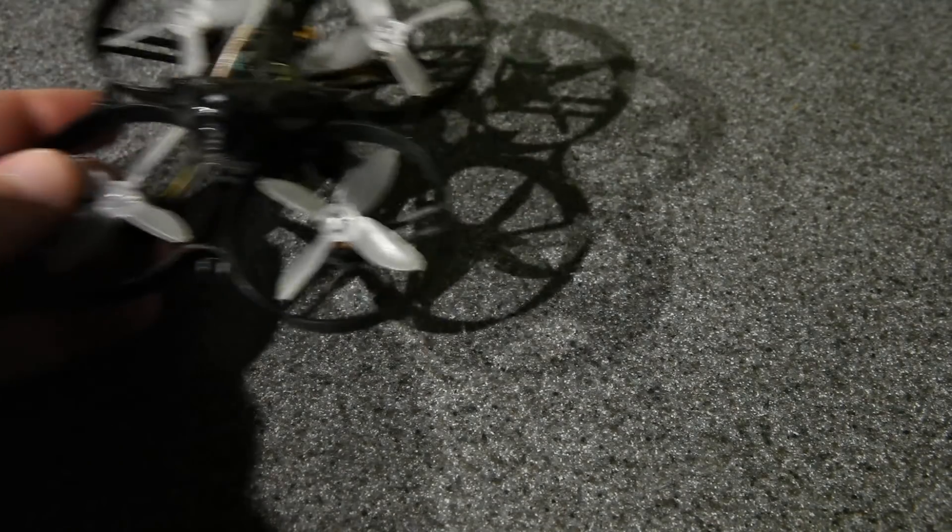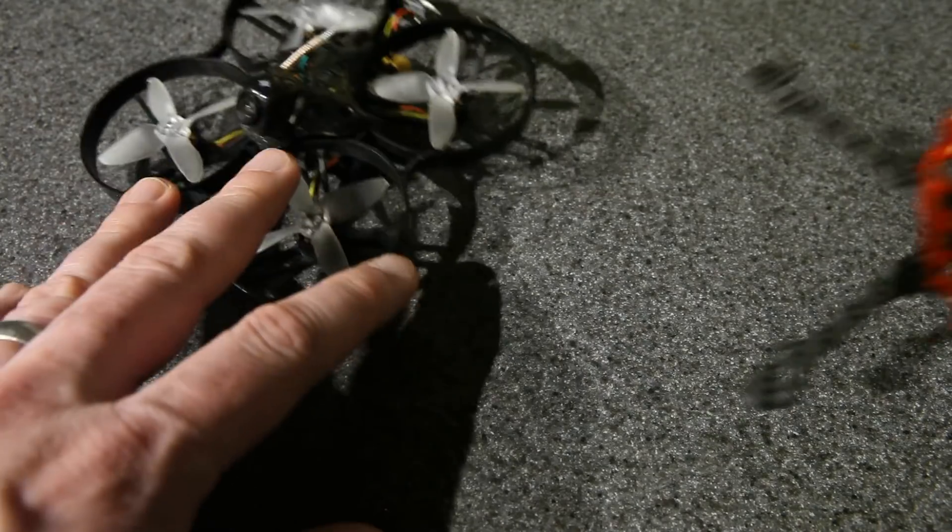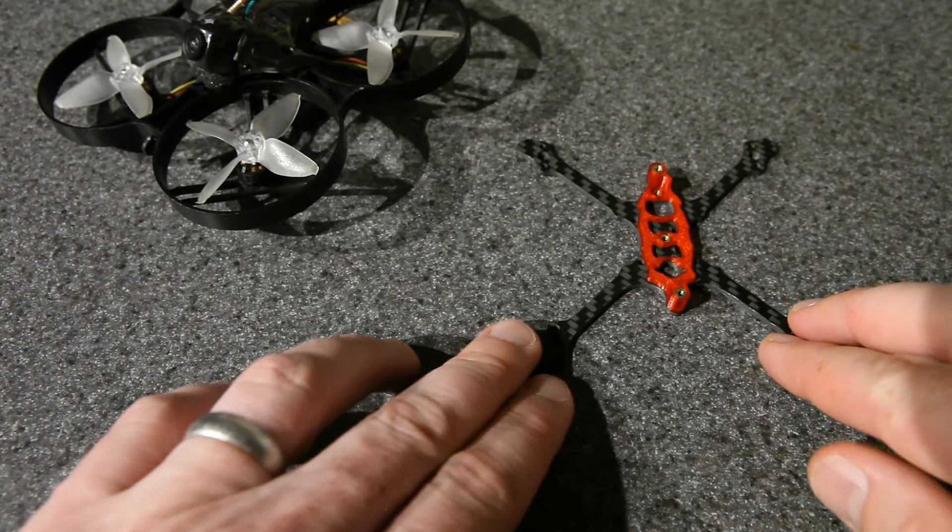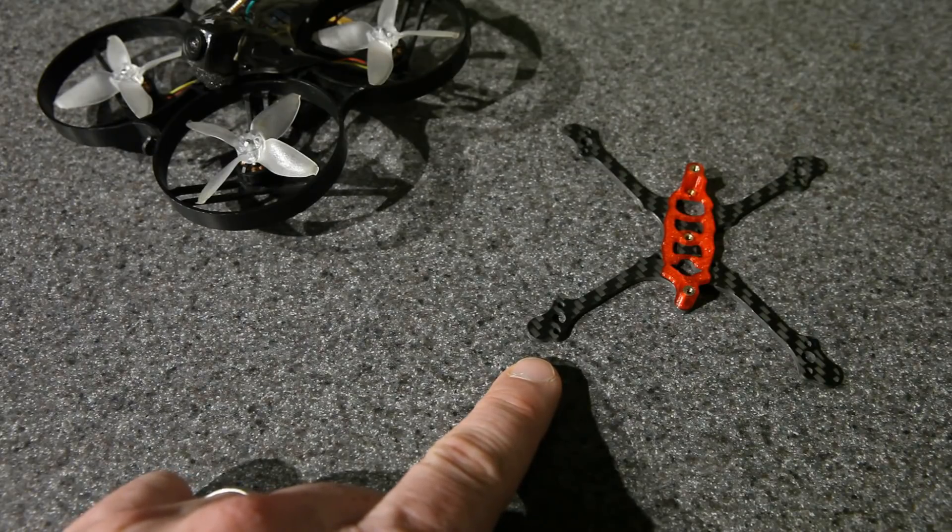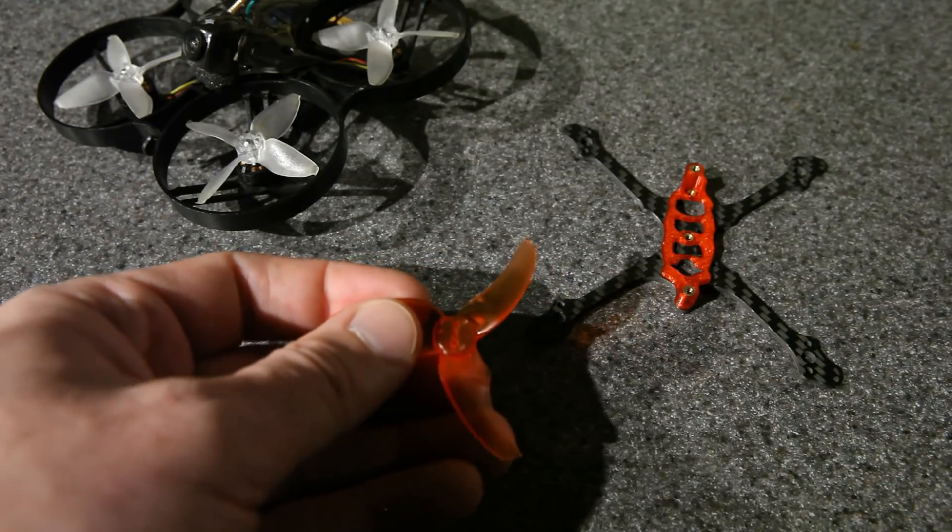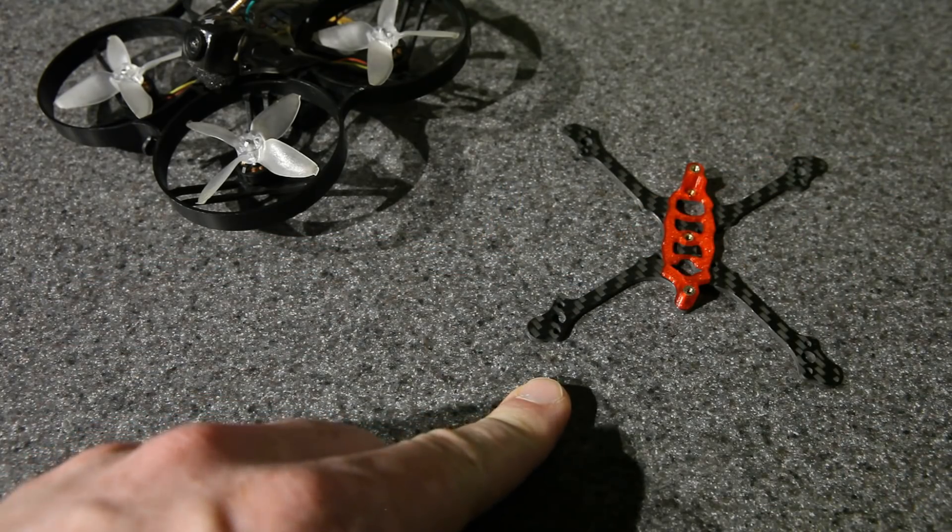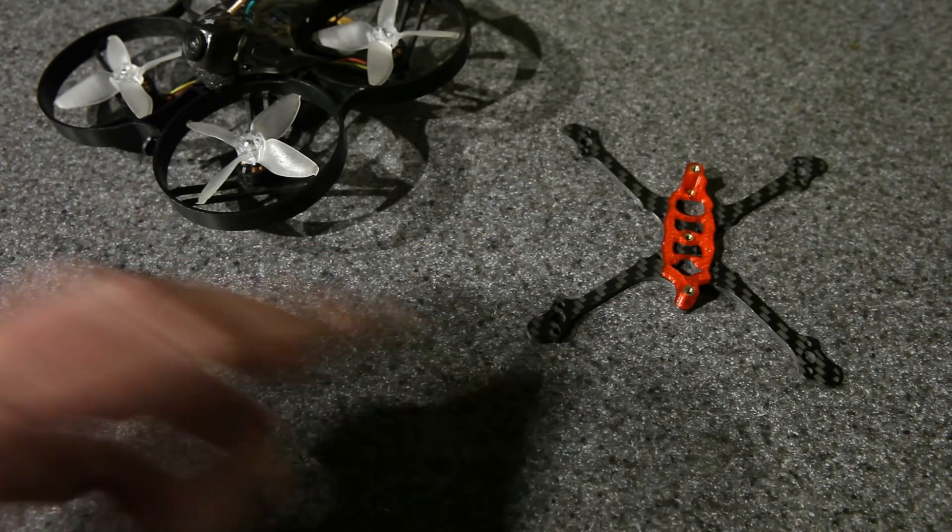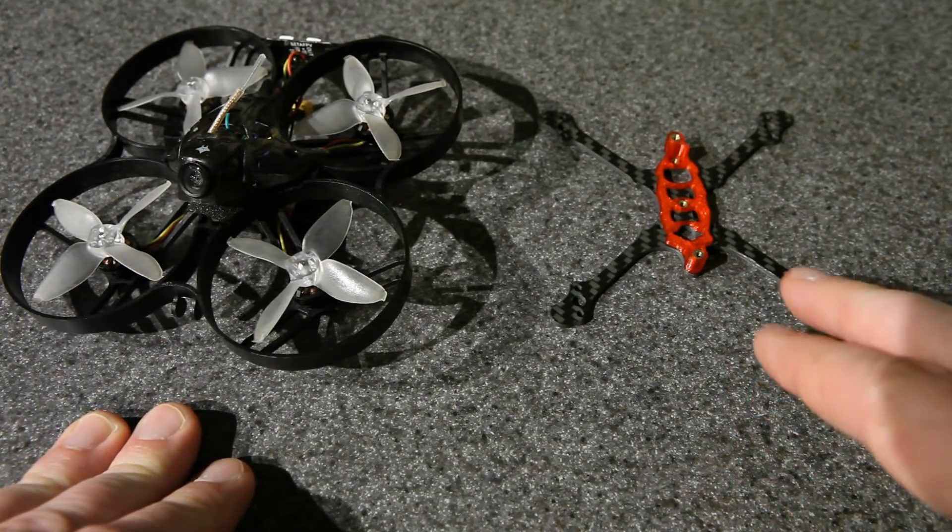So what do you guys think I should build first? Should I build a 3S Shutterbug 85, or put those 8000 kV motors on this Primo frame? On this frame, running 2S, I suspect it'll be really good with 2.5 inch props like these, and 3S is going to be crazy on this thing. Or would you build something else? What would you build with components like these? Let me know down in the comments below.